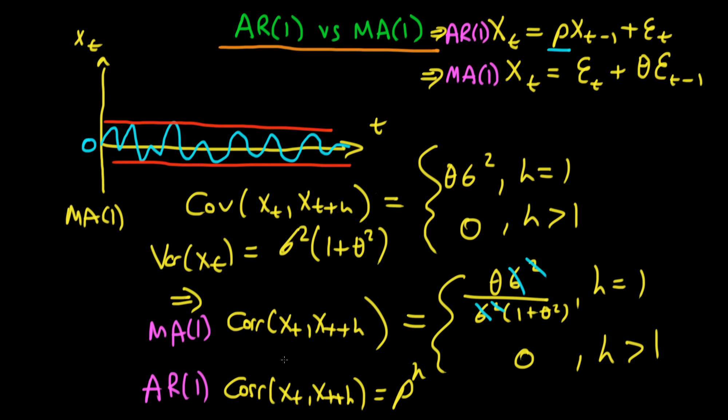Notice that these two correlations are actually different from one another. That's actually going to form the basis of a way of testing whether our process is an MA(1) process or whether it is an AR(1) process.